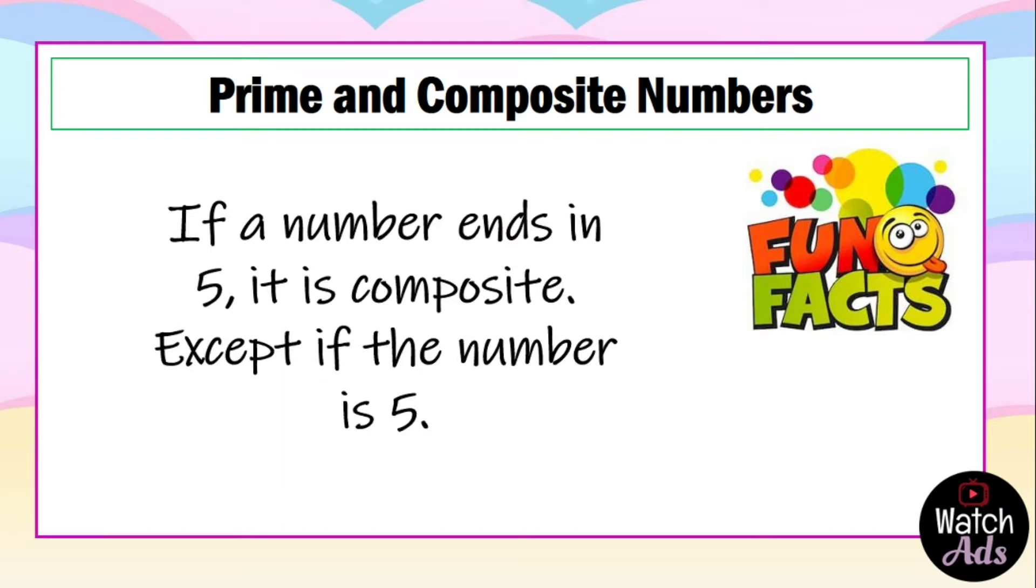If a number ends in 5, it is composite, except if the number is 5. Of course, it is also very important that you memorize your table of multiplication so that you can identify which of the numbers are a multiple of a number. Which means if a number is a multiple of a number, it is composite.